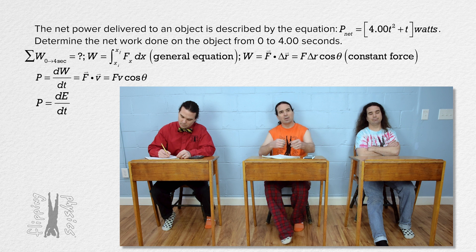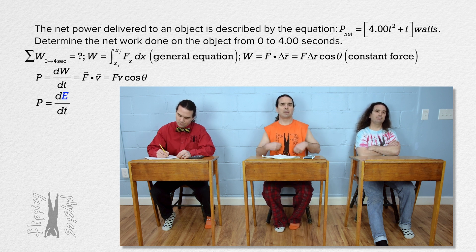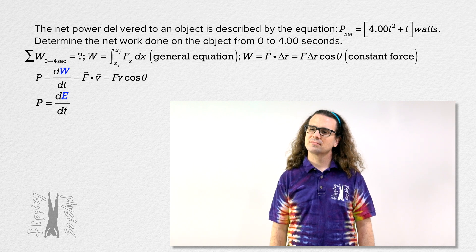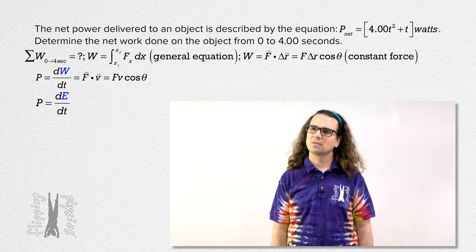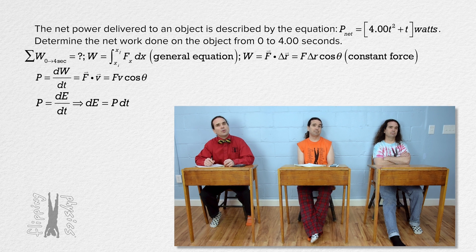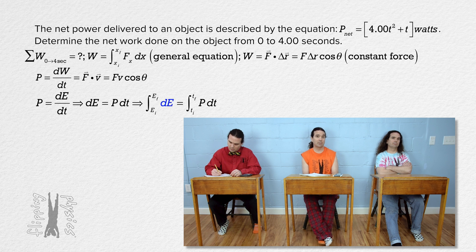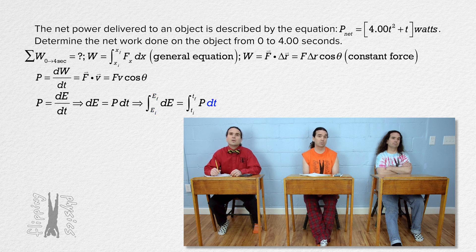Starting with power equals the derivative of energy with respect to time, because power can be defined more generally using energy transfer rather than work. Multiply both sides by dt, then take the integral of both sides. The left-hand side is with respect to energy, so the limits are from energy initial to energy final. The right-hand side is with respect to time, so the limits are from time initial to time final.